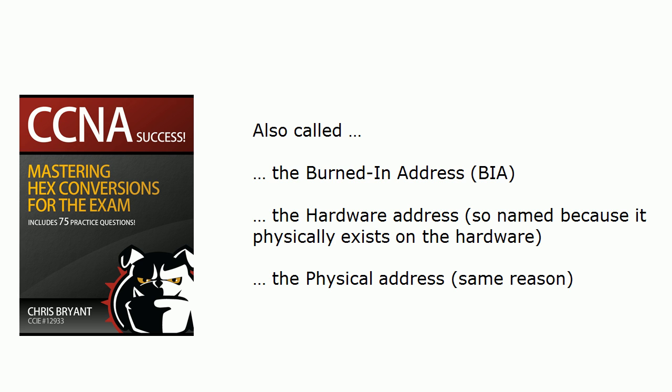I'll show you where to find that on a Cisco router in a moment, but one thing to watch out for: the name 'physical address' tends to suggest it runs at the physical layer of the OSI model — and it does not. MAC addresses run at the data link layer, or Layer 2. They're also called L2 addresses or Layer 2 addresses.